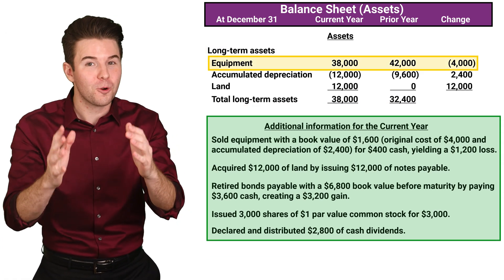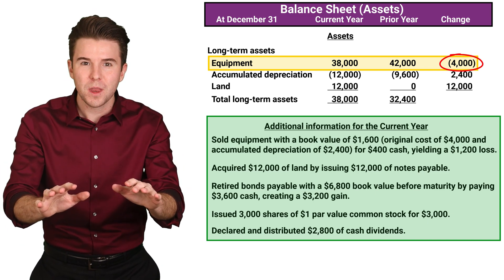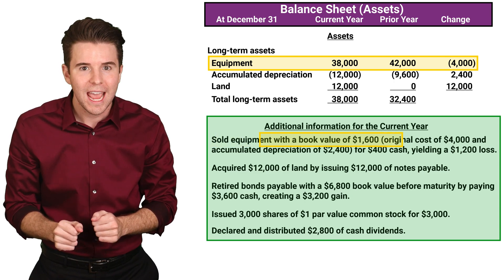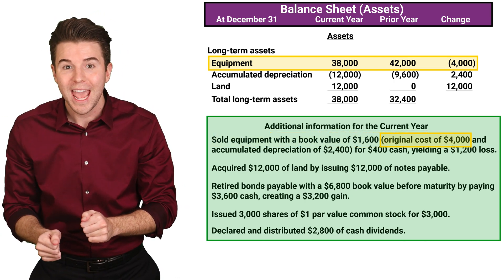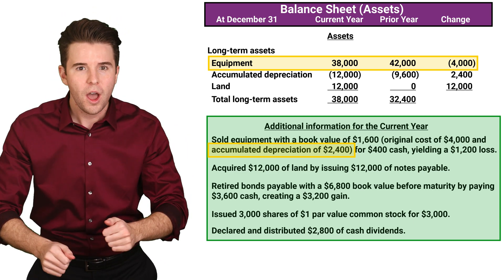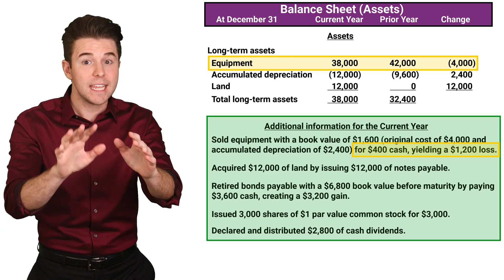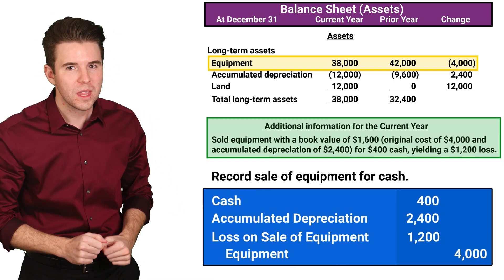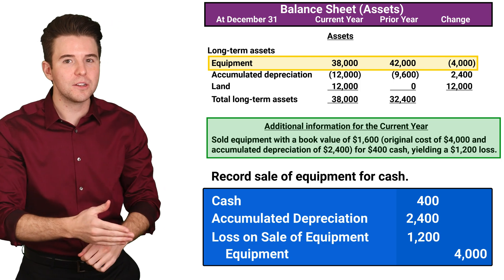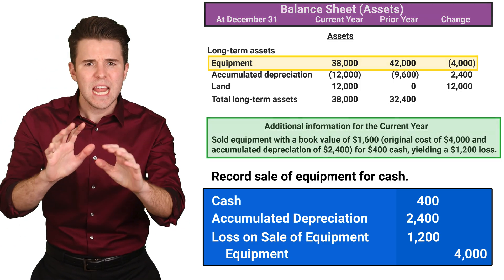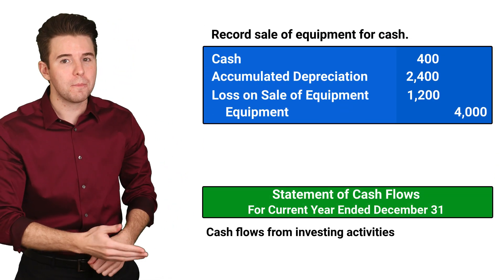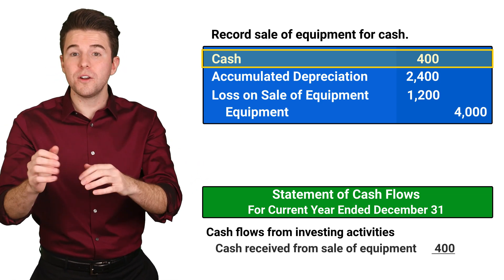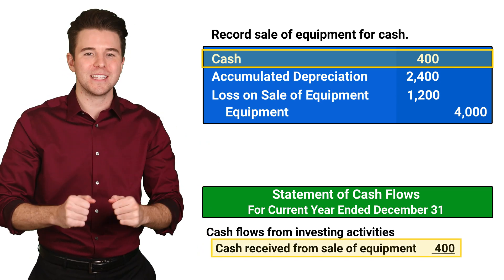First, we see a decrease in equipment for $4,000. To figure out what caused this decrease, we look at our additional information and see that we sold equipment with a book value of $1,600 that had an original cost of $4,000 and accumulated depreciation of $2,400 for $400 cash, yielding a $1,200 loss. The journal entry would look something like this. The $4,000 decrease in equipment cost is explained by this sale, and we report the $400 cash received from the sale of equipment under investing activities.